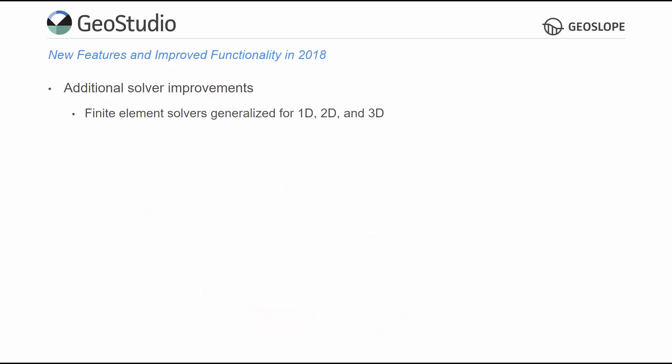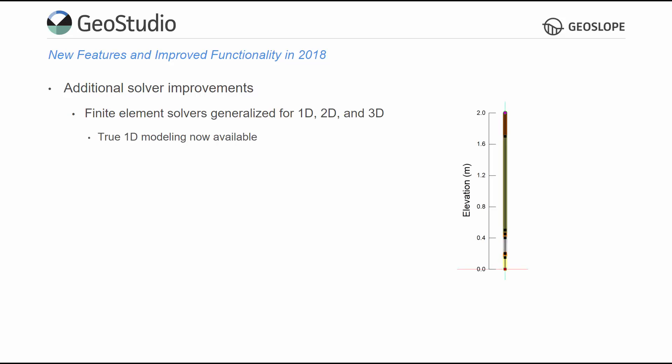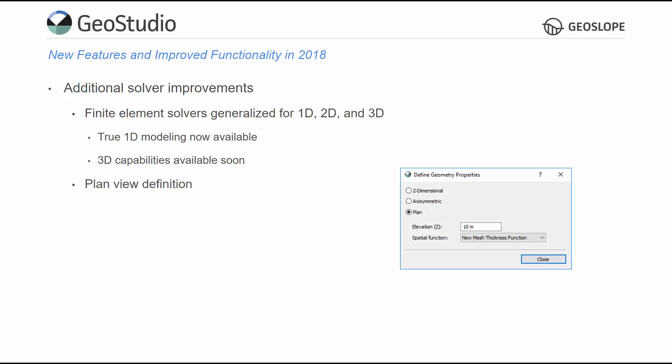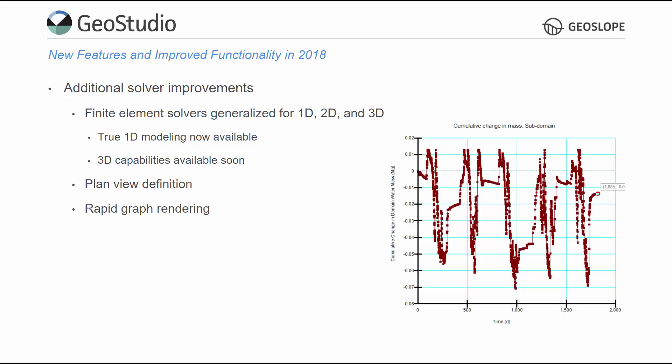Finite element solvers for all heat and mass transfer formulations have been completely redeveloped and generalized for one-dimensional, two-dimensional, and three-dimensional problems. GeoStudio 2018 introduces the ability to conduct true one-dimensional simulations. Three-dimensional simulation capabilities will be available in a subsequent release. Additional solver improvements include the reformulation of PlanView, allowing users to define aquifer thickness with spatial functions, and rapid graph rendering, as graphs are now computed during solve time.